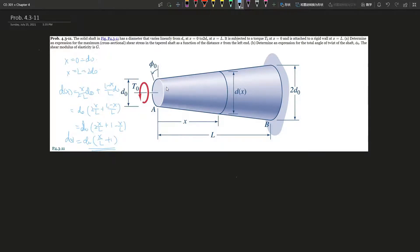Okay, so once we find out what that equation is, so what are we finding? Determine an expression for the maximum cross-sectional shear stress in the tapered shaft as a function of the distance x from the left end. Okay, so the maximum shear stress, this is T0 in this case times r, which is the maximum distance from the center of the thing to the side, and divide this by J.